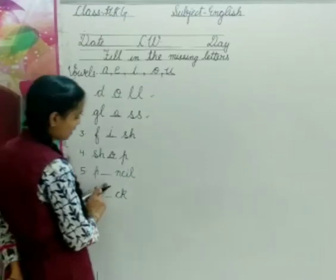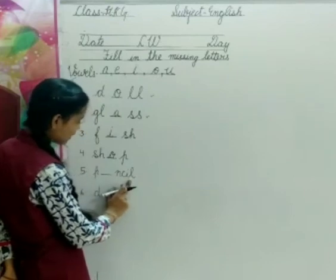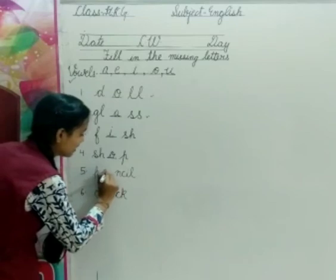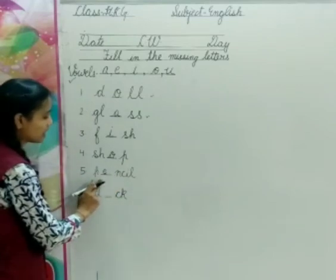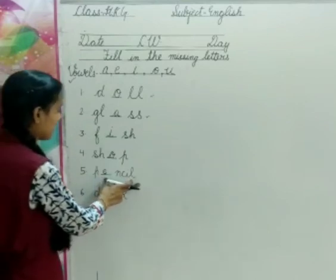Fifth, P dash N-C-I-L. Yeh toh kuch konsa word lag raha hai, hain na, jis se hum write karthe hain notebooks mein. Toh yeh yahan pe kya se likhenge? Pencil. Toh pencil ki kya spelling hoti hai? P-E-N-C-I-L. Now hamara word complete ho jayega, that is pencil.